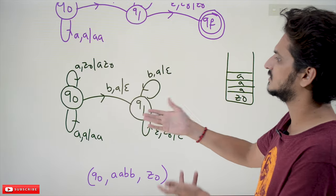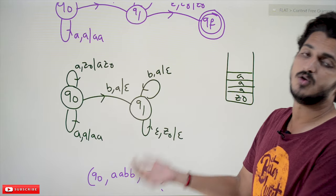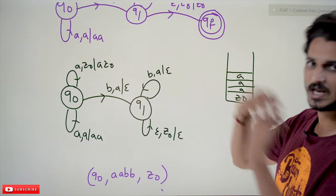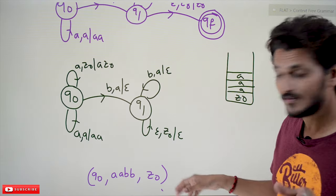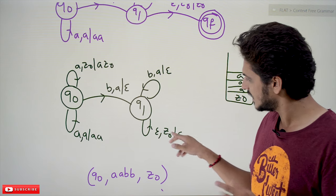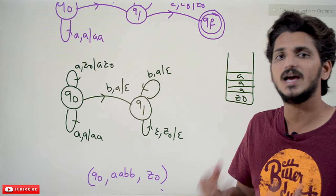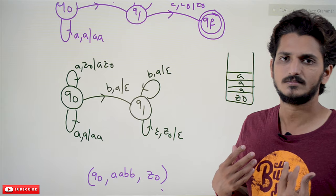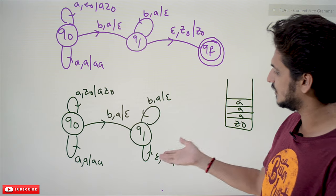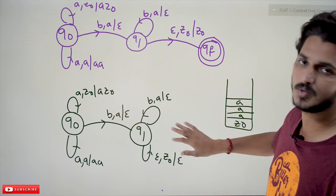For the empty stack method, the first state logic is the same. When you see 'b' and the stack top is 'a', we move to state q1 and pop the element. When input is epsilon and the stack top is z0, we pop z0 as well, making the stack completely empty. This is the difference between acceptance by final state and acceptance by empty stack.